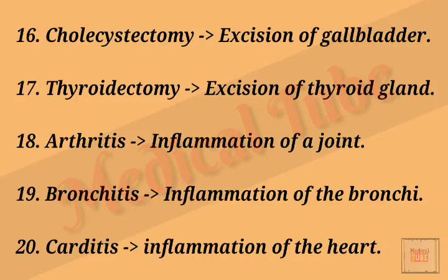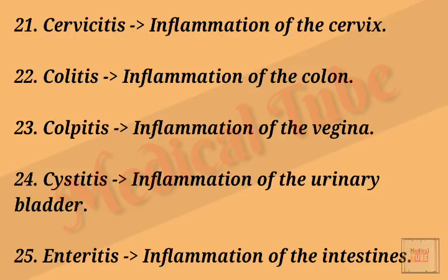Number nineteen: bronchitis means inflammation of a bronchus. Number twenty: cauterization means closure of the cervix. Number twenty-two: colitis means inflammation of the colon. Number twenty-three: colpitis means inflammation of the vagina. Number twenty-four: cystitis means inflammation of the urinary bladder.